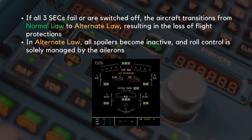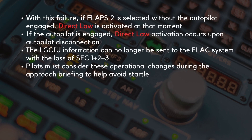If all three SEC computers fail or are switched off, the aircraft transitions from normal law to alternate law, resulting in the loss of flight protections. In alternate law, all spoilers become inactive and roll control is solely managed by the ailerons. During approach and landing configurations, specific changes occur. In a normal alternate law approach, upon selecting landing gear down, the aircraft switches to direct law. However, with this failure, if FLAPS 2 is selected without the autopilot engaged, direct law is activated at that moment. If the autopilot is engaged, direct law activation occurs upon autopilot disconnection. This adjustment is influenced by the fact that the LG-CIU information can no longer be sent to the ELAC system with the loss of SECs 1, 2, and 3. Pilots must consider these operational changes during the approach briefing to help avoid startle.